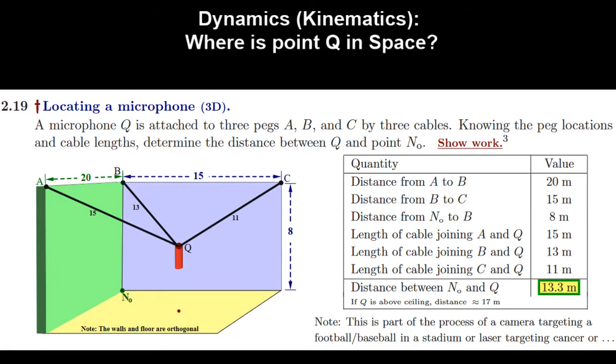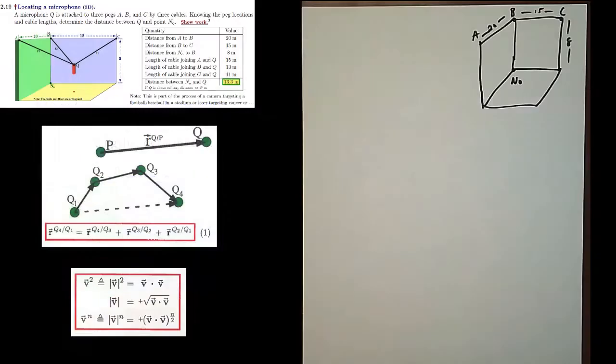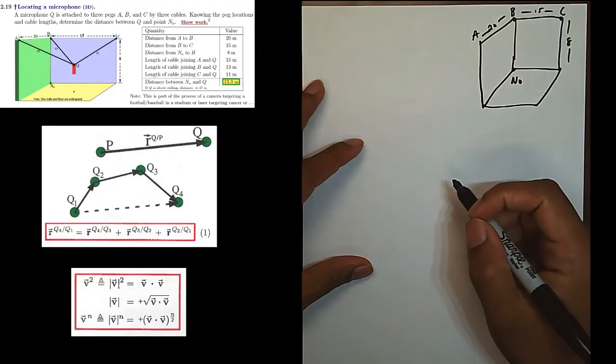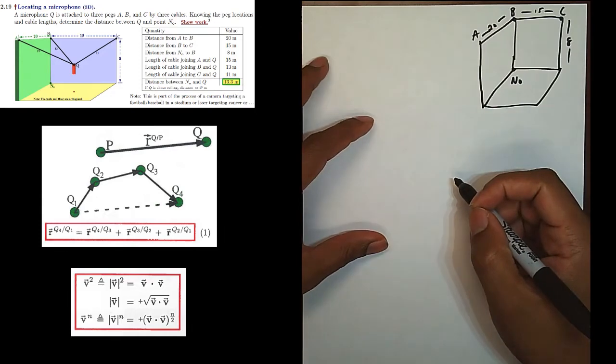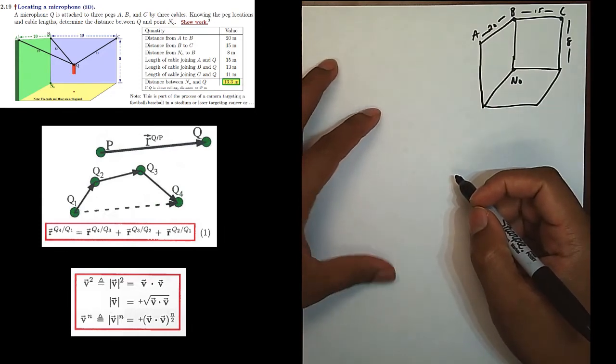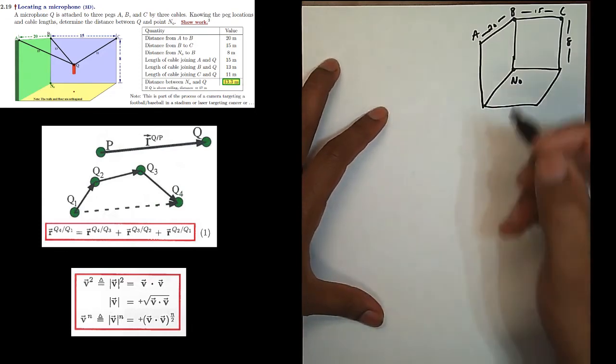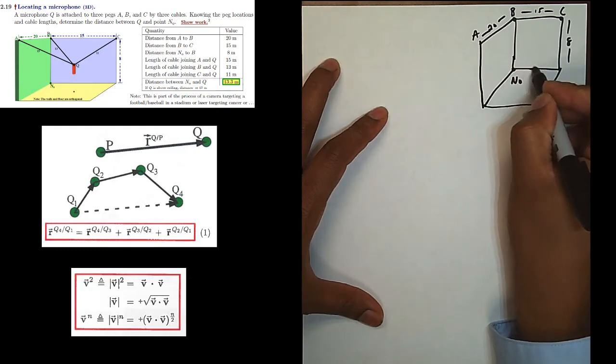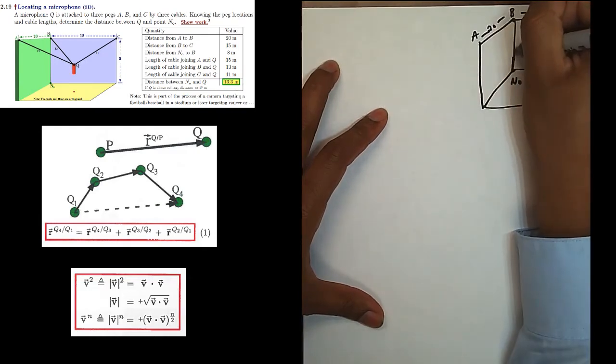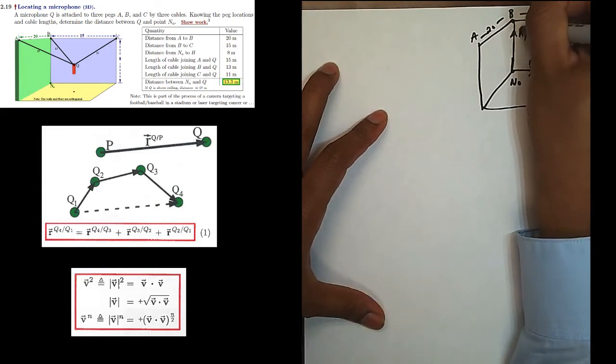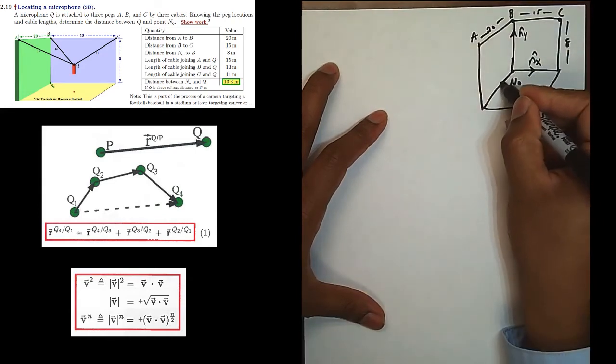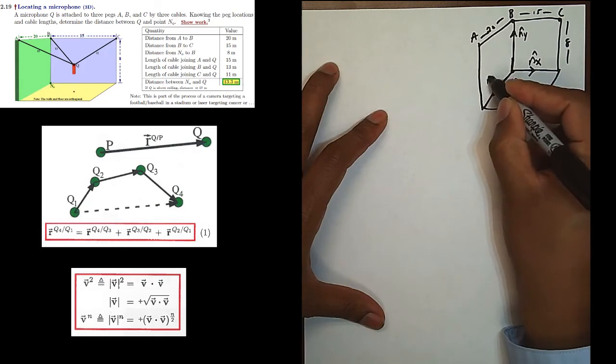The first thing we need to do if we're going to use vectors is define a vector basis. I'm going to define a unitary right-handed or orthogonal set of vectors, which I will call nx, ny, and nz. And nx is going to go out to the right, and ny will go up the page, and nz out along the wall between A and B.